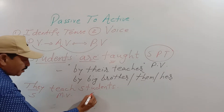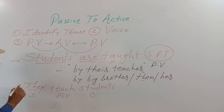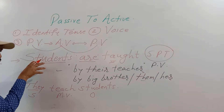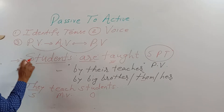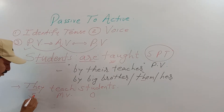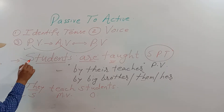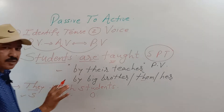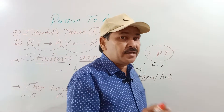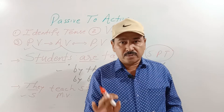They teach students — ये इसका answer होगा। Now see here — its subject, its main verb, and its object. यहाँ पर ये sentence passive में है, ये active में है। यहाँ पर 'students' को अहमियत दी गई — इसलिए passive use किया गया। लेकिन यहाँ पर subject को अहमियत दी गई — तो ये active है। In this way you can find out any answer of passive to active.